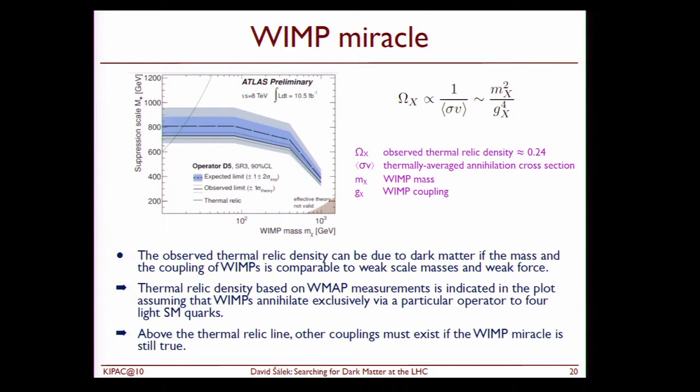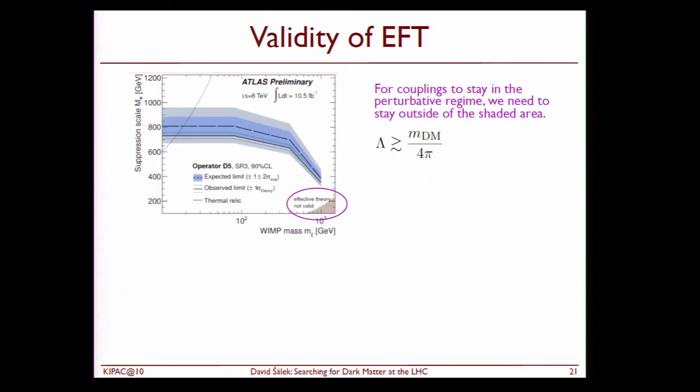This is a very similar plot just from Atlas but there is something more I want to show you here. So from the WIMP miracle we know that a thermal relic actually can be due to dark matter if the scale for the WIMPs is comparable to the weak scale. So this is also what motivates the dark matter searches at the LHC. And also we can then use this line here which we draw based on basically this equation to draw some conclusions about dark matter results at the LHC. Basically meaning if you are above this line the suppression is too large and you don't have enough dark matter to actually make the observed thermal relic. So you will need more operators not only this one to get the observed thermal relic density.